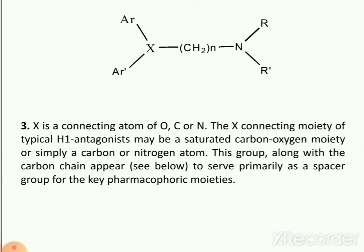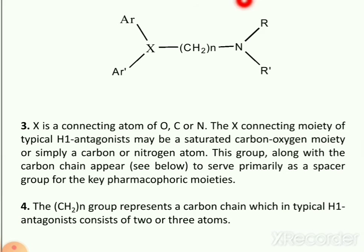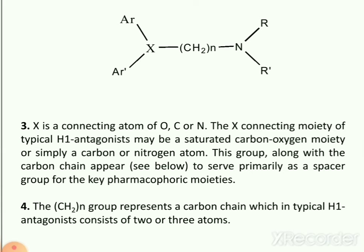In this picture, these are the two key pharmacophoric moieties — the first moiety and the second moiety. The X and the carbon chain act as a spacer between them. The CH2-N group represents a carbon chain which in typical H1 antagonists consists of two or three atoms.